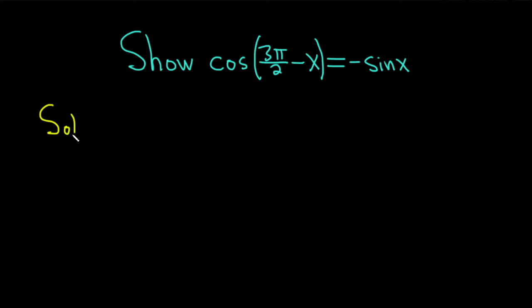Solution. We'll start by writing down the formula that we're going to use for this problem. That tells us if we have the cosine of a minus b, this is equal to the cosine of a times the cosine of b. And then you flip the sine.